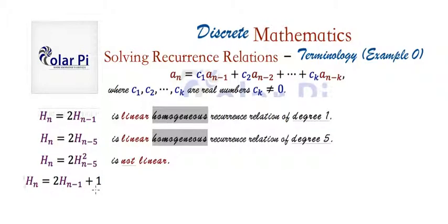It's non-homogeneous because this plus one here is a term that does not involve the H sub n's. That's what we mean by non-homogeneous - when we have a term that does not contain the a sub n's.